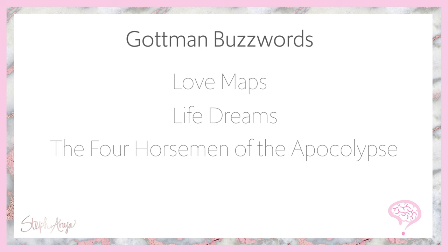I love to start model reviews with the buzzwords to look for, because when you're taking practice exams or the actual exam, there are certain words that'll help refresh your memory. The phrase love maps, life dreams, the four horsemen of the apocalypse, and the sound marital house — these are key phrases. If you see those on the exam, you know for sure it's a Gottman question. They're usually not that obvious, but using these words in your practice will make it easier to identify Gottman-related questions.